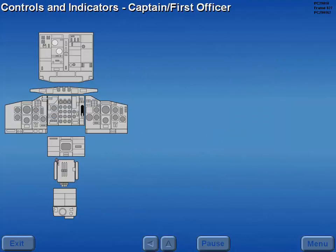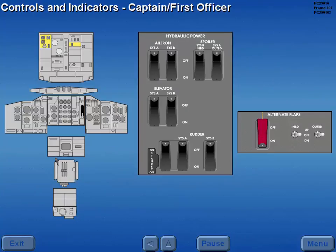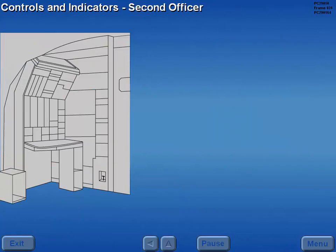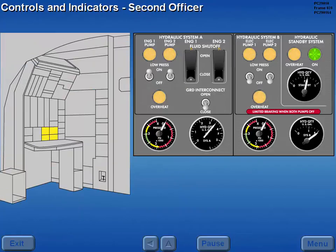Controls and indicators for the hydraulic system are located on the overhead panel and the center instrument panel. Controls and indicators are also located on the second officer's lower panel.